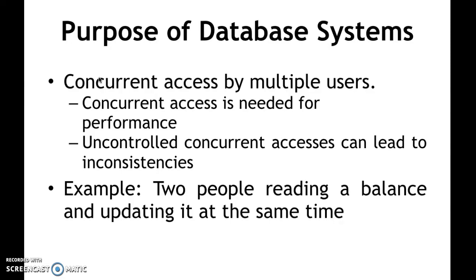Another problem was concurrent access by multiple users. The same file had to be used by multiple users, which was difficult because a file can be opened in read mode or write mode. If one user opens it in write mode, concurrent access was not possible. Concurrent access is needed for higher performance. Uncontrolled concurrent access can lead to inconsistency — for example, two people reading a balance and updating at the same time can lead to an inconsistent database.